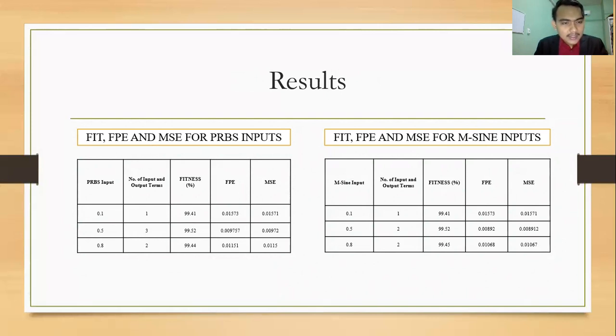So let's begin with PRBS input. For 0.1 band, actually we use number of input and output terms such as many as four for input and output terms. So from this four, we need to analyze which one give the best result. So for the 0.1, the best result for number of input and output terms goes to number one because it gives the best value in terms of fitness, FPE, and MSE.